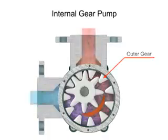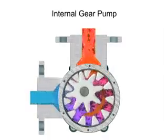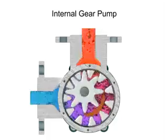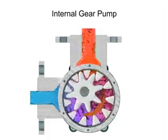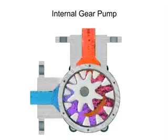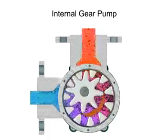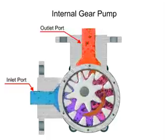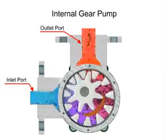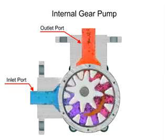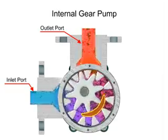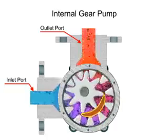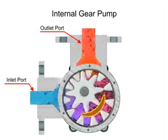As the inner gear rotates, it meshes with and moves the outer gear. Liquid is trapped in the gear spaces and carried from the inlet to the discharge. A stationary crescent-shaped divider separates the intake and discharge portions of the fluid.